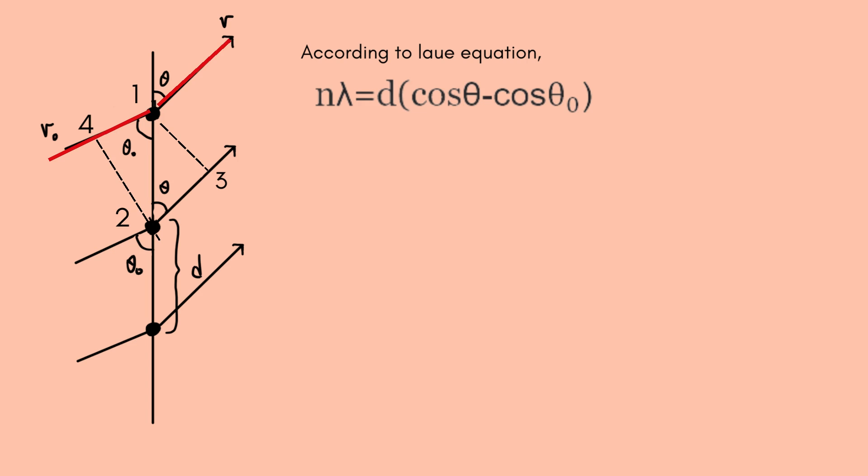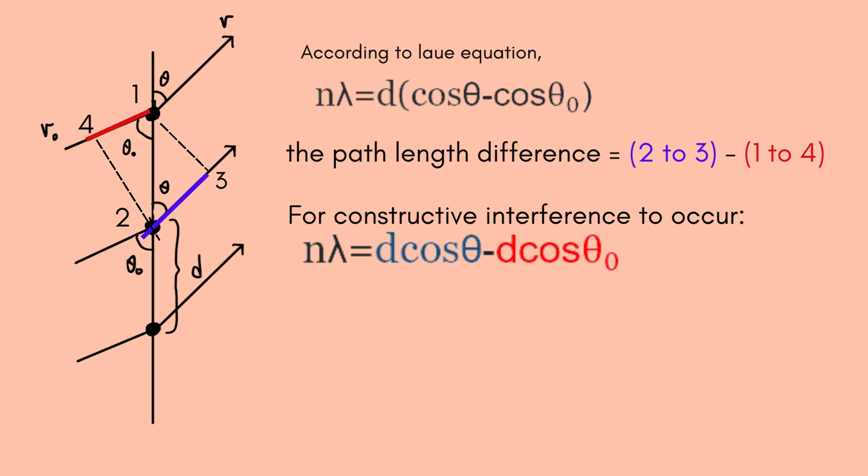The upper wave travels an extra distance of 4 to 1 compared to the lower wave before it's scattered. After scattering, the lower wave travels an extra distance of 2 to 3. The path length difference is simply the distance from 2 to 3 minus the distance from 4 to 1. For constructive interference to occur, we need this path length difference to be an integer multiple of the wavelength.